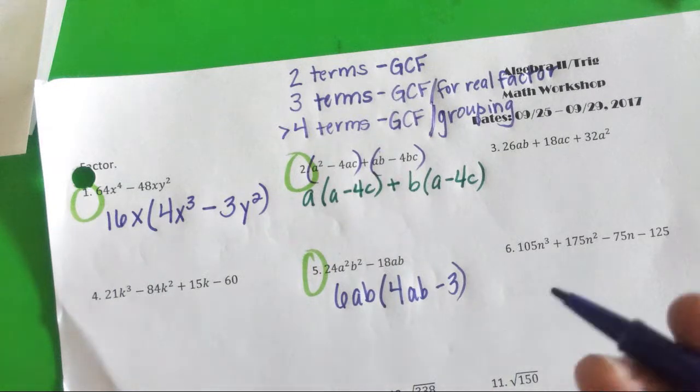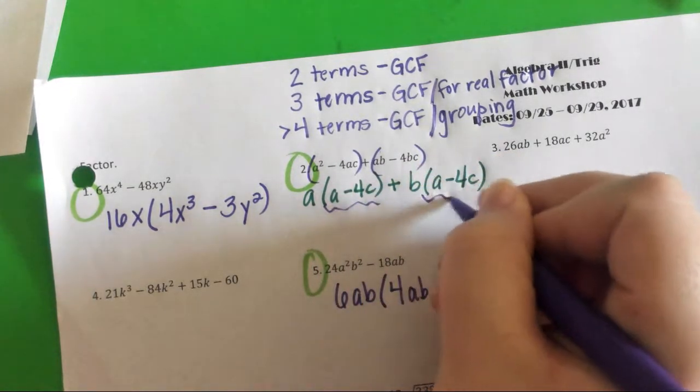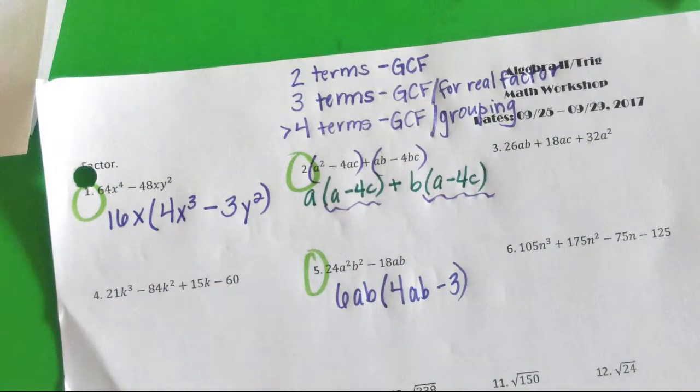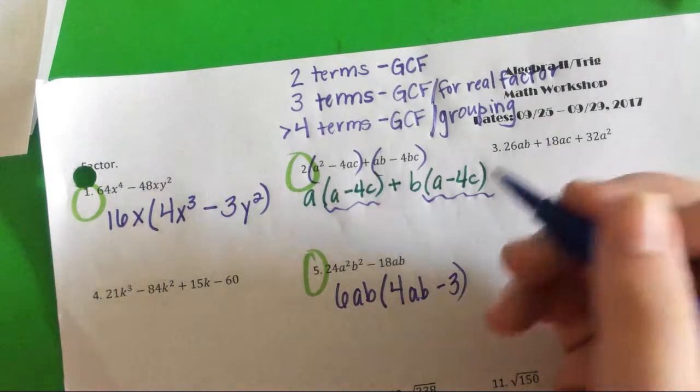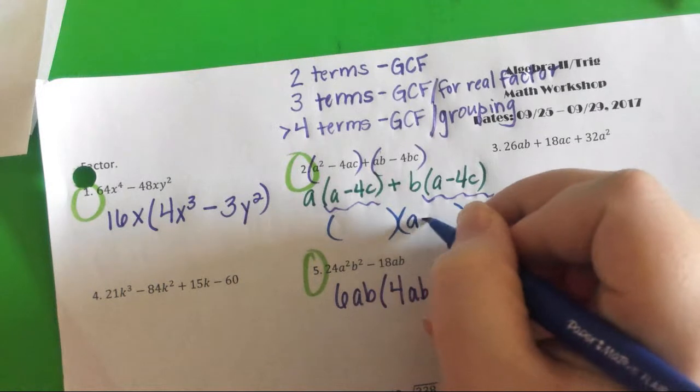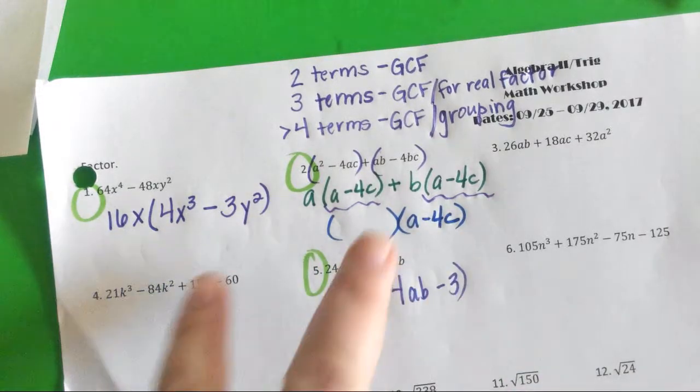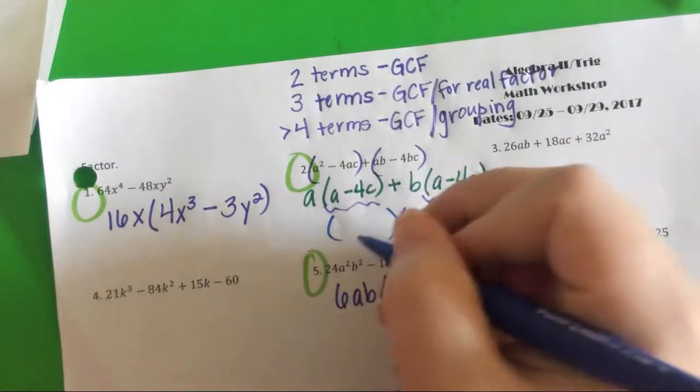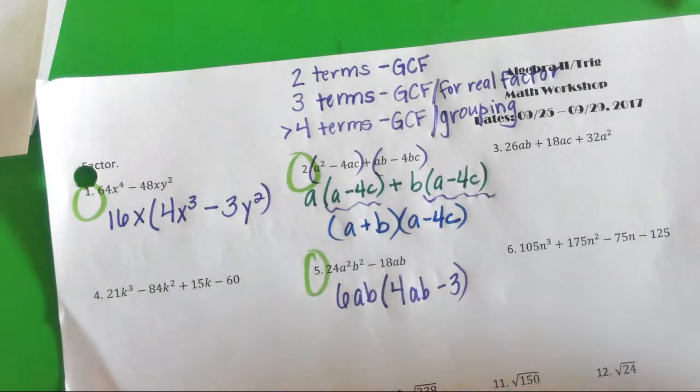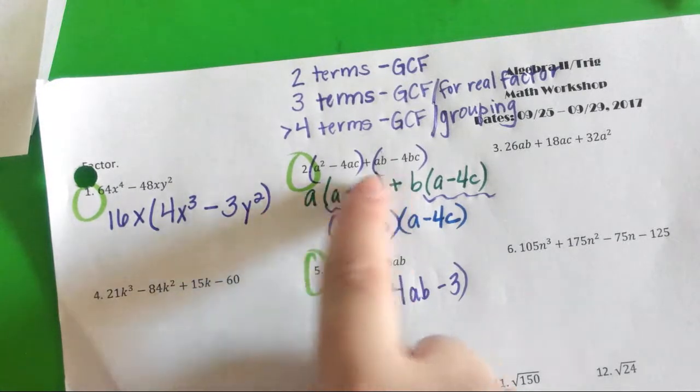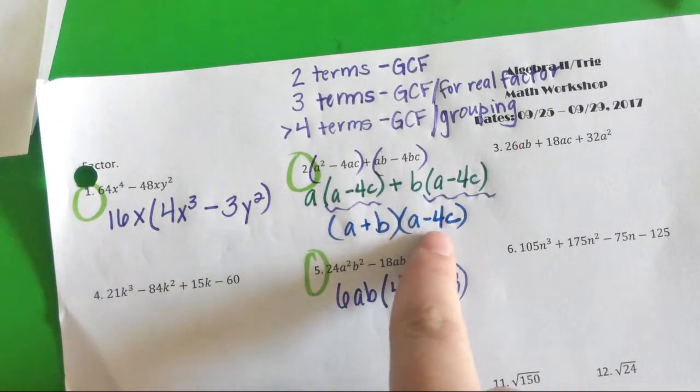We asked ourselves, is there anything we can factor out of this first group? We noticed the A, so we factored out an A. We were left with A minus 4C. With the second group, we noticed they both had a B. We factored out a B. We were left with A minus 4C. What's really interesting about this? A minus 4C happens twice. We've got the same thing in both parentheses. That is not a miracle. That is actually an intentional thing. That's how grouping works.